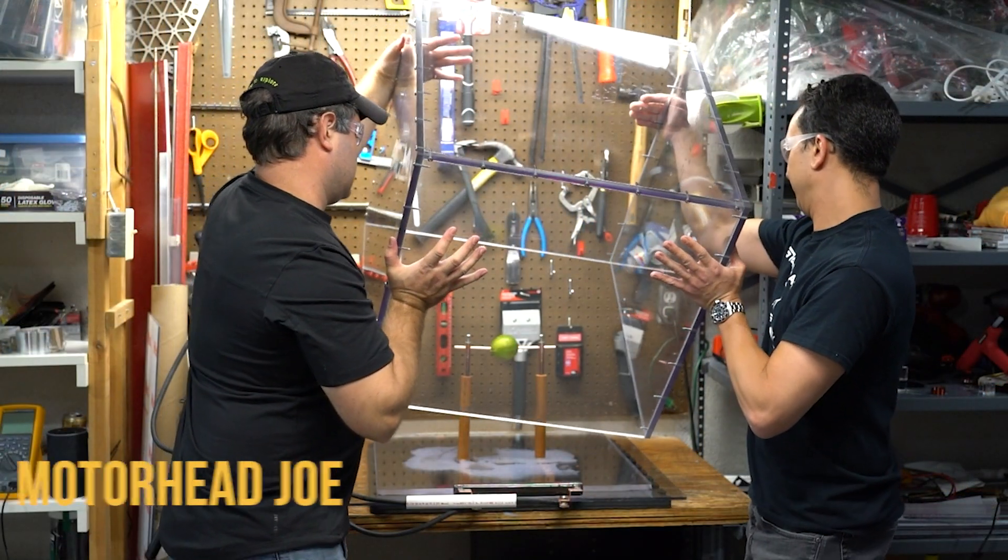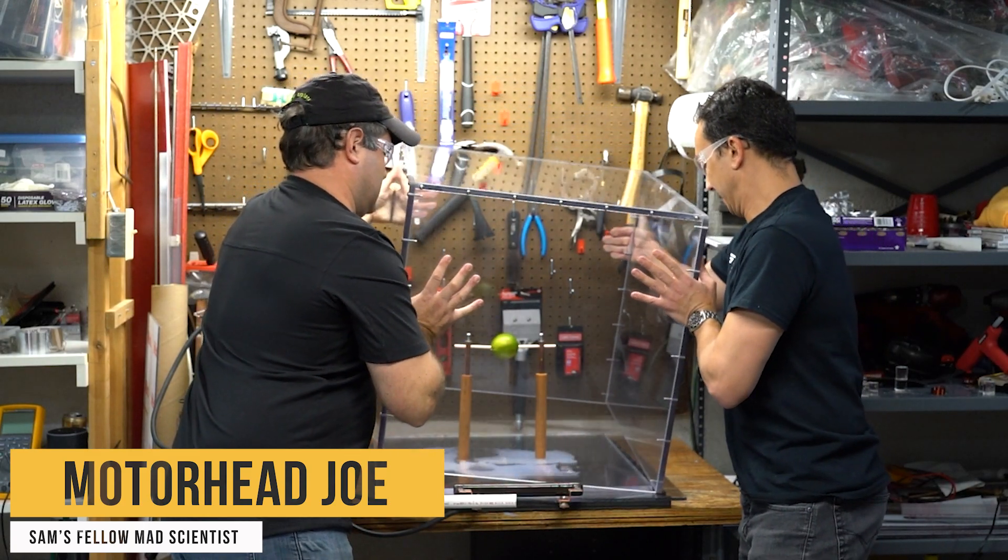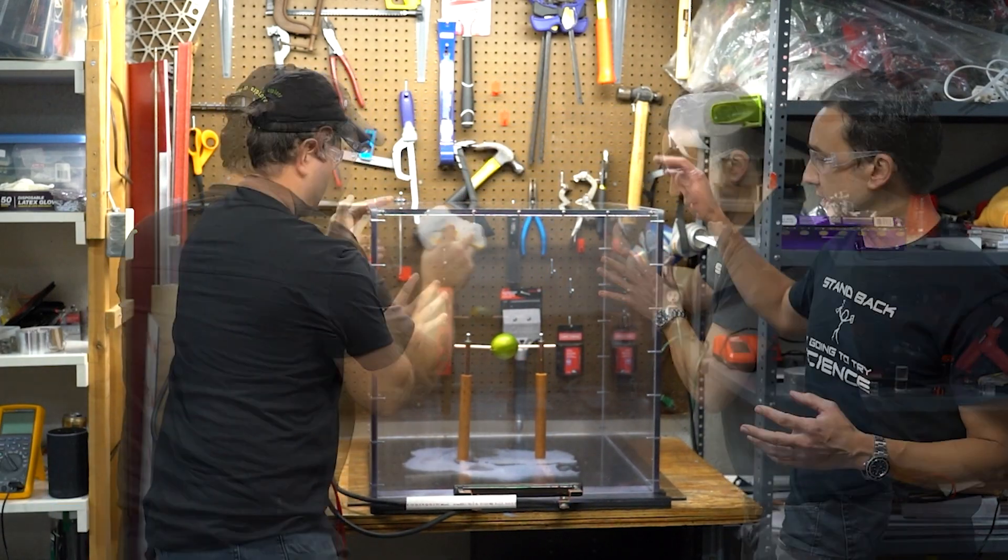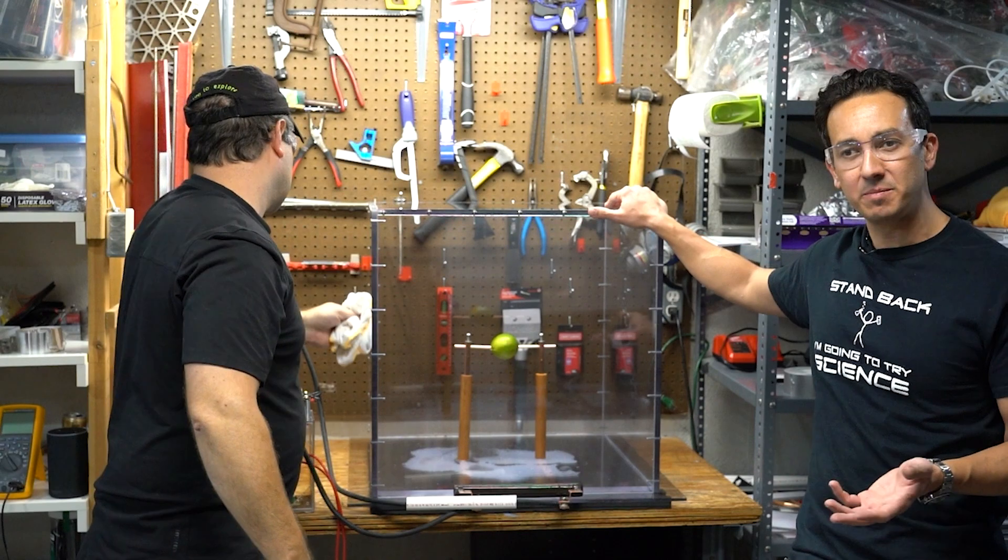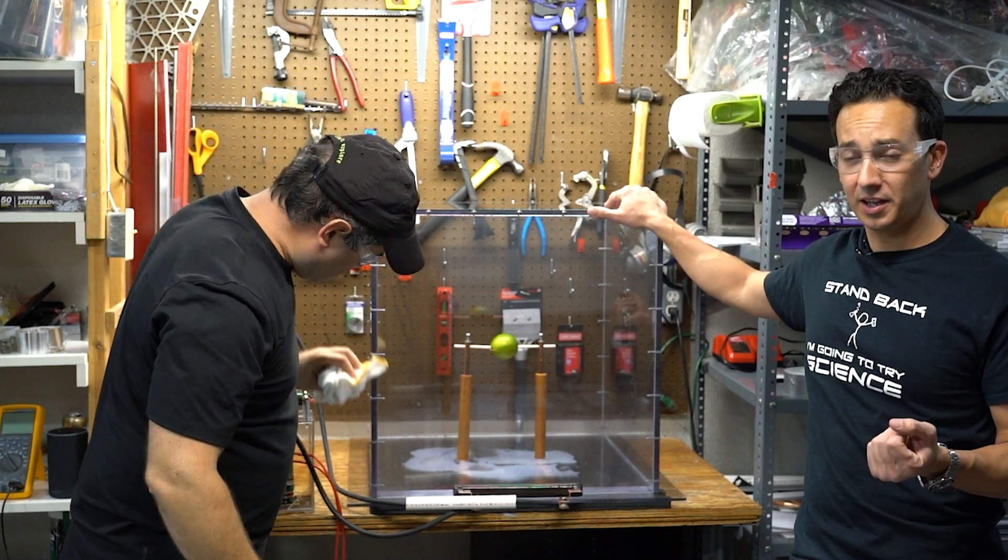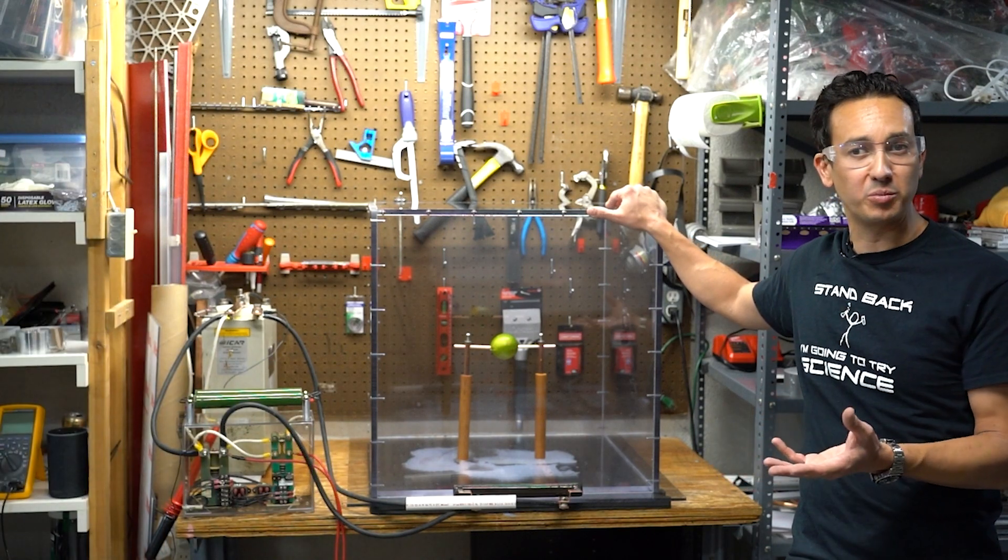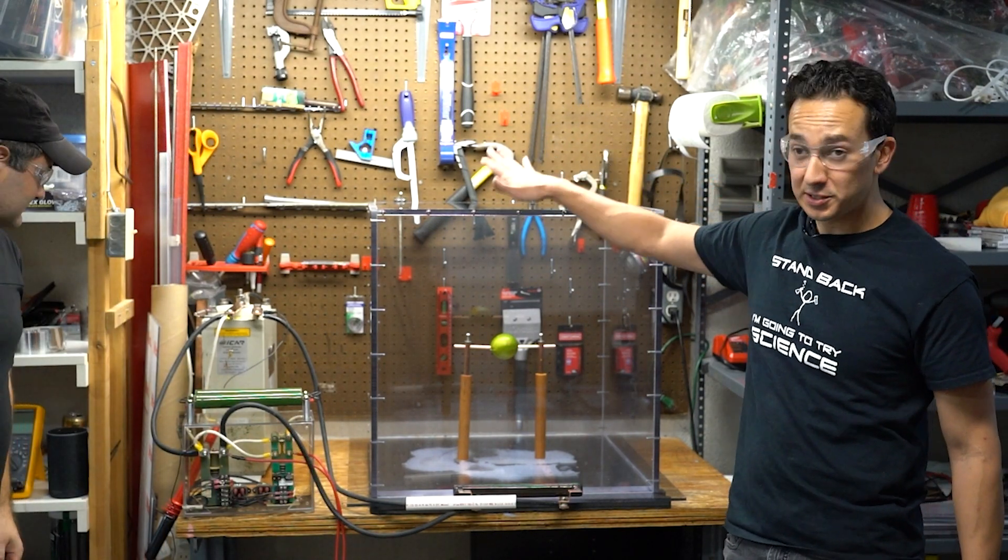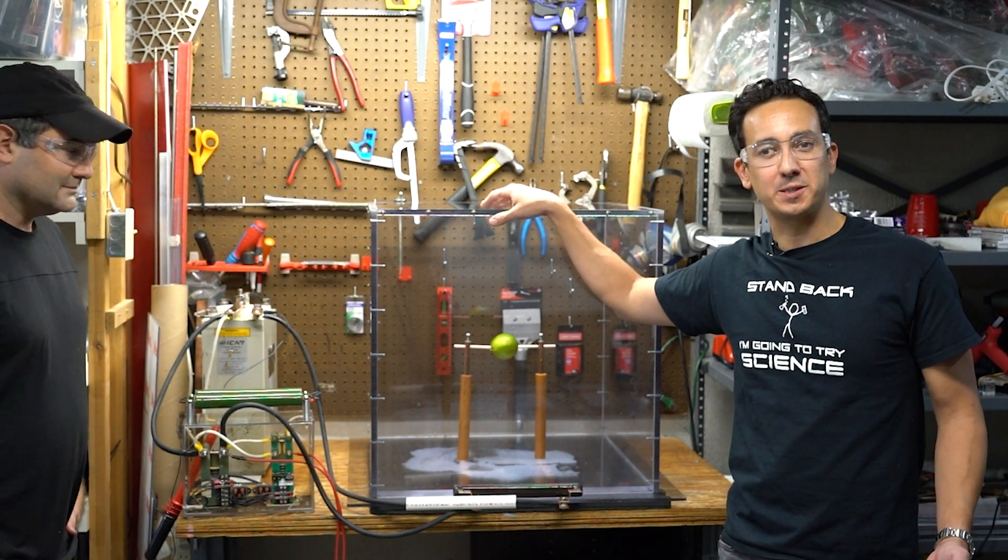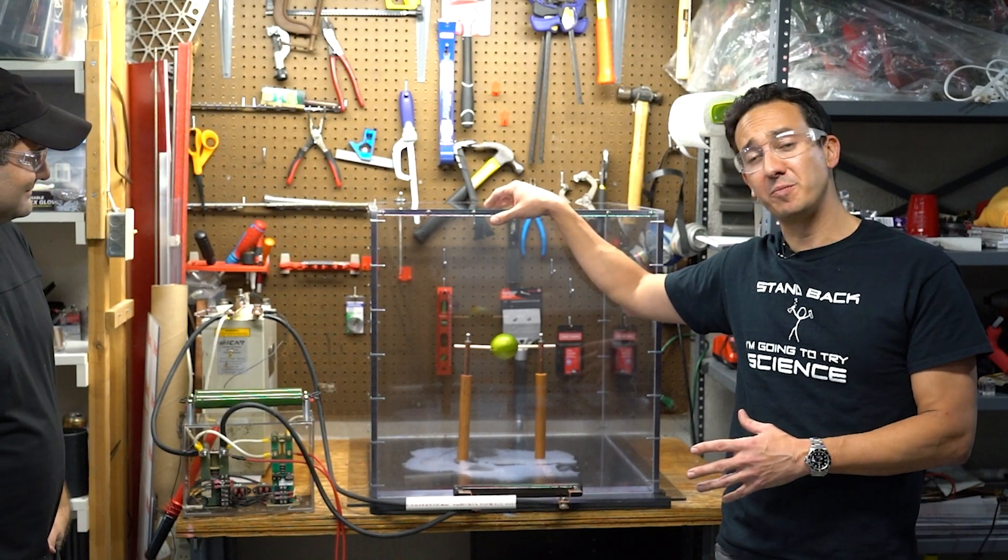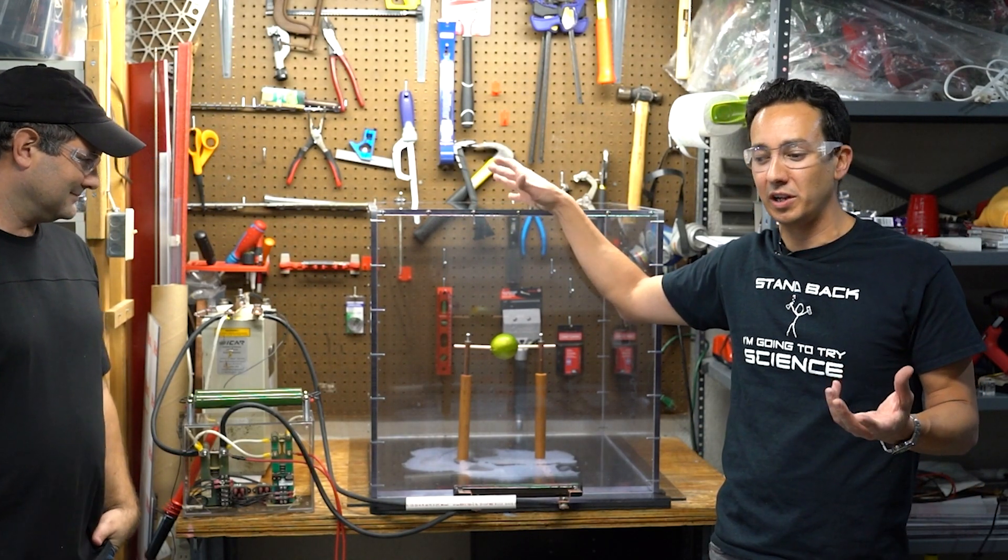This box is made out of half-inch Lexan polycarbonate. It is a bulletproof material, very similar to what you would find in bulletproof windows, and so far it's held up really well to these experiments. So this bulletproof box lets us try out some really crazy, exciting high voltage stuff.